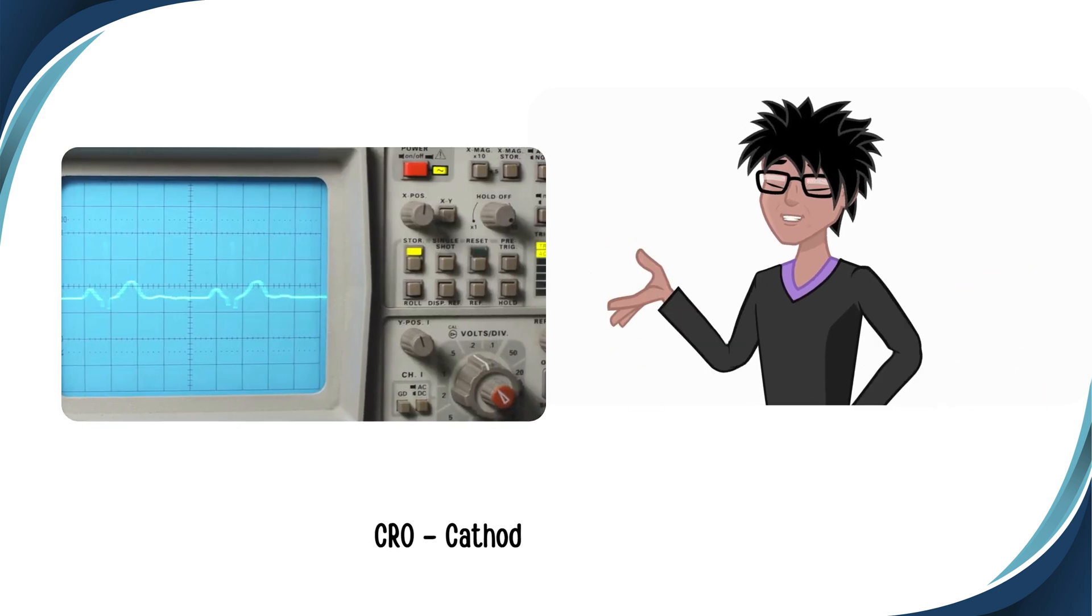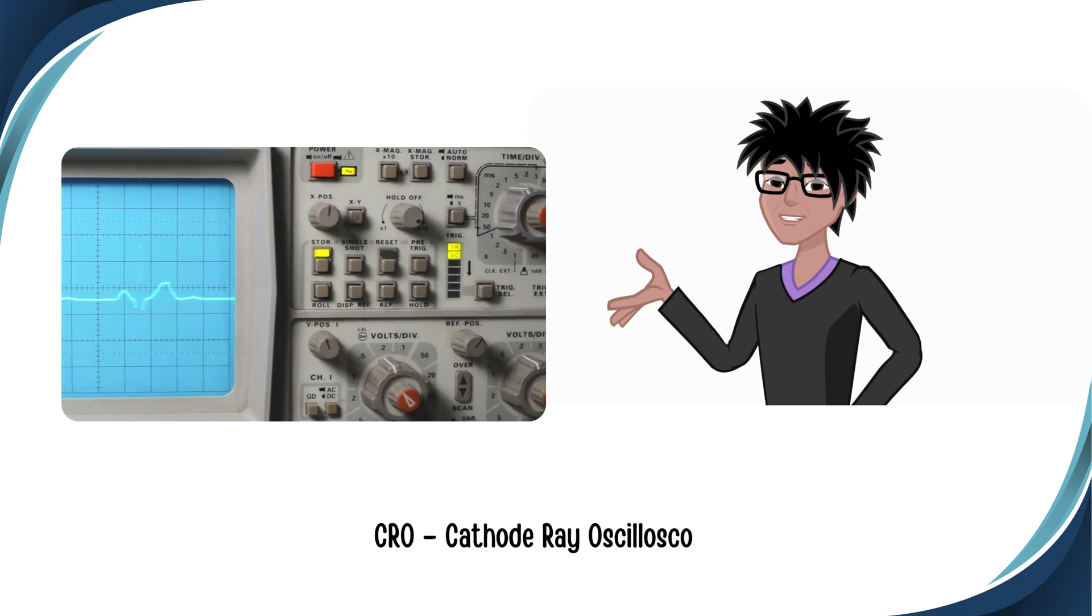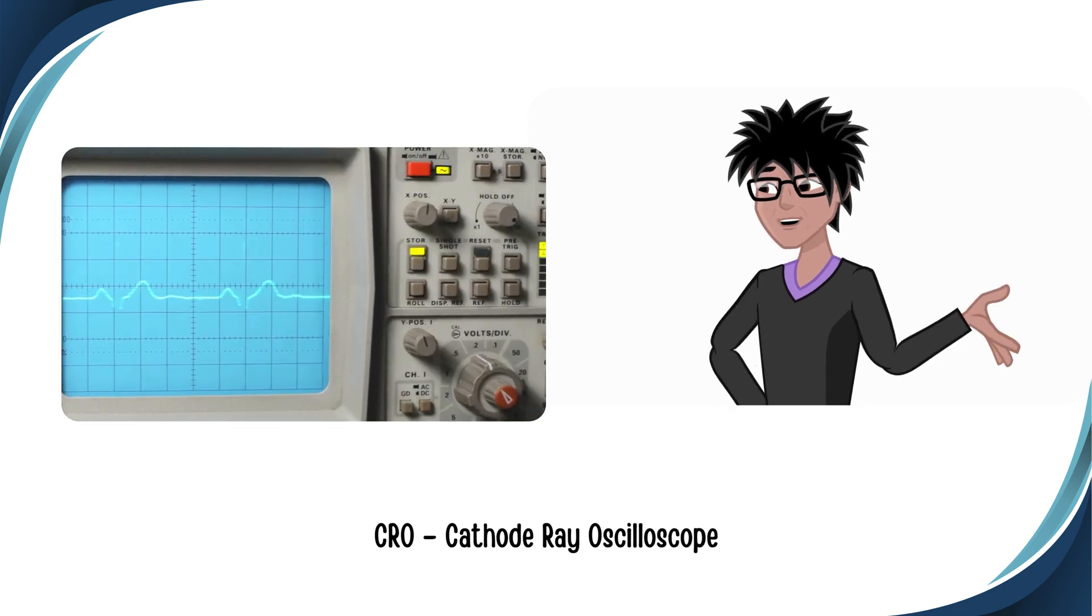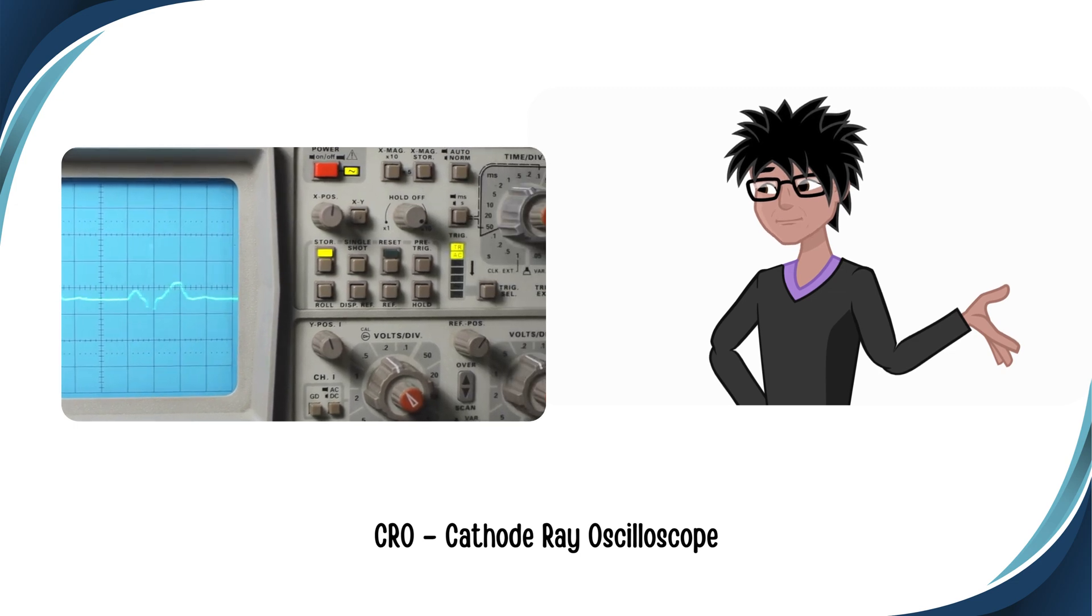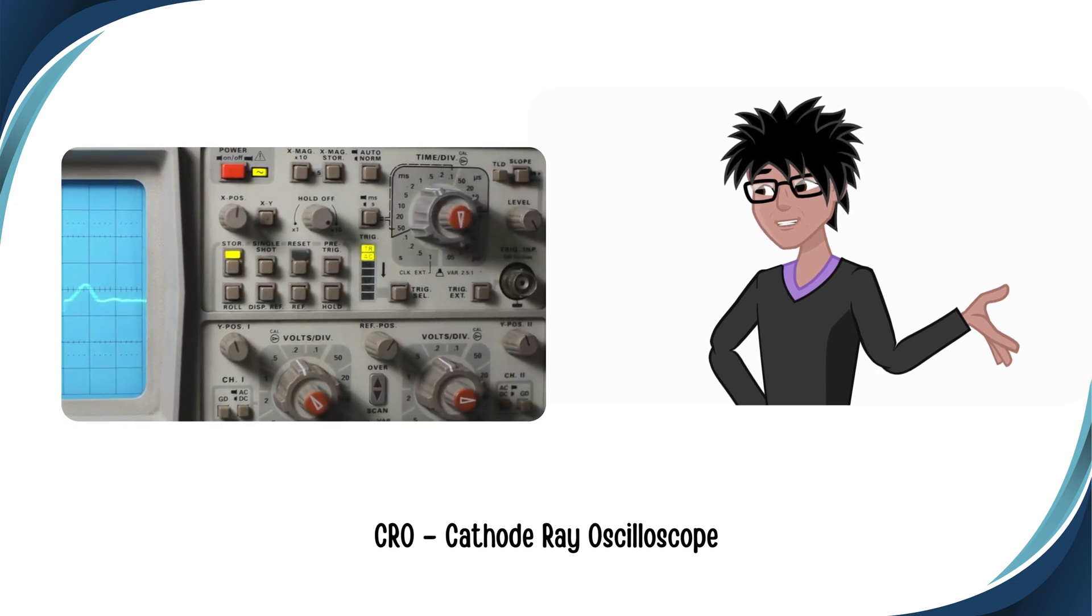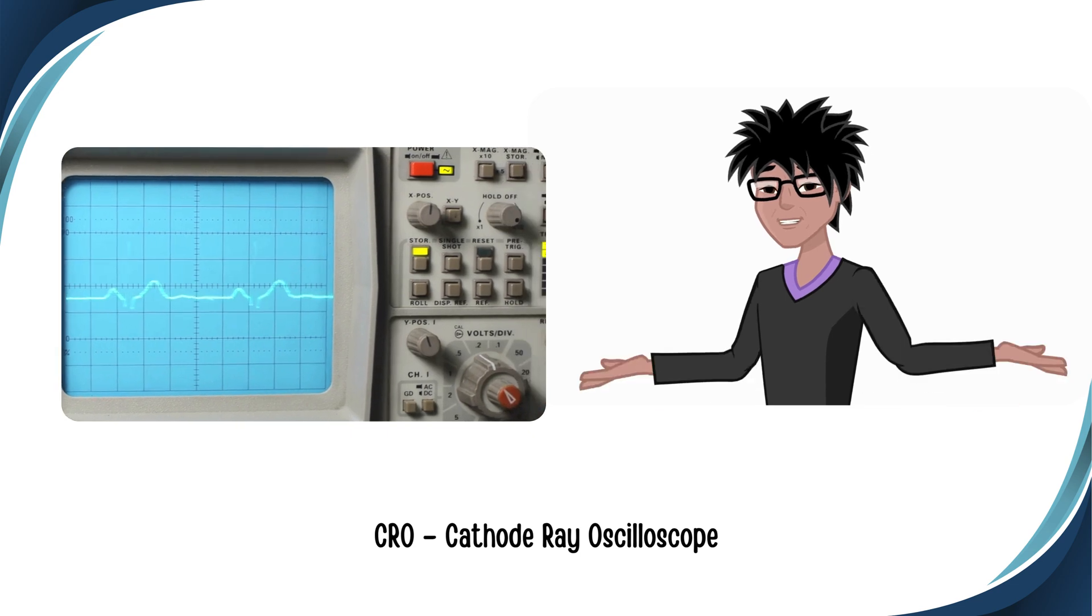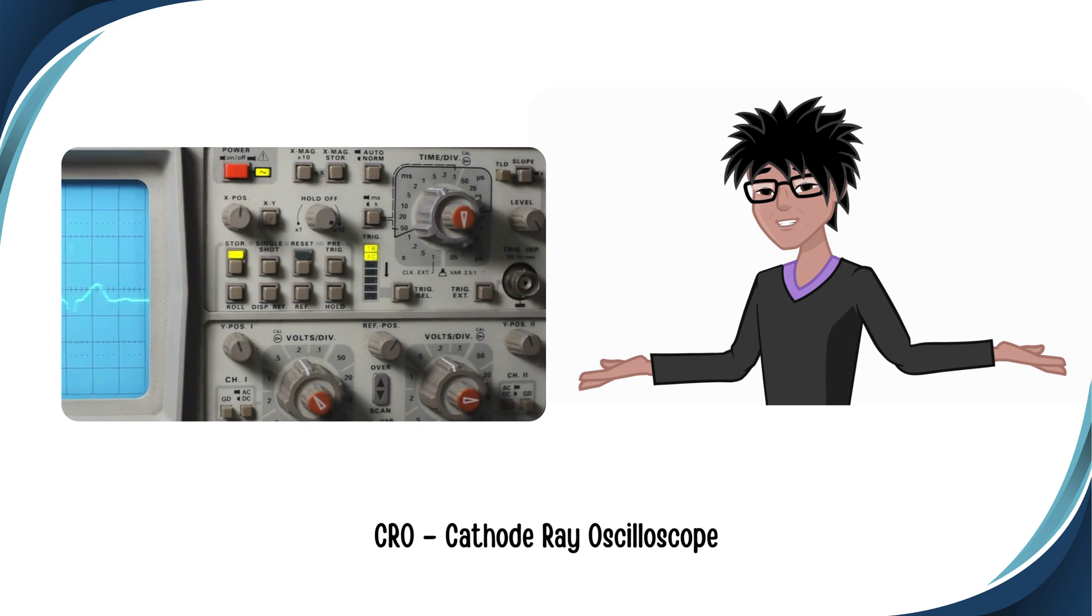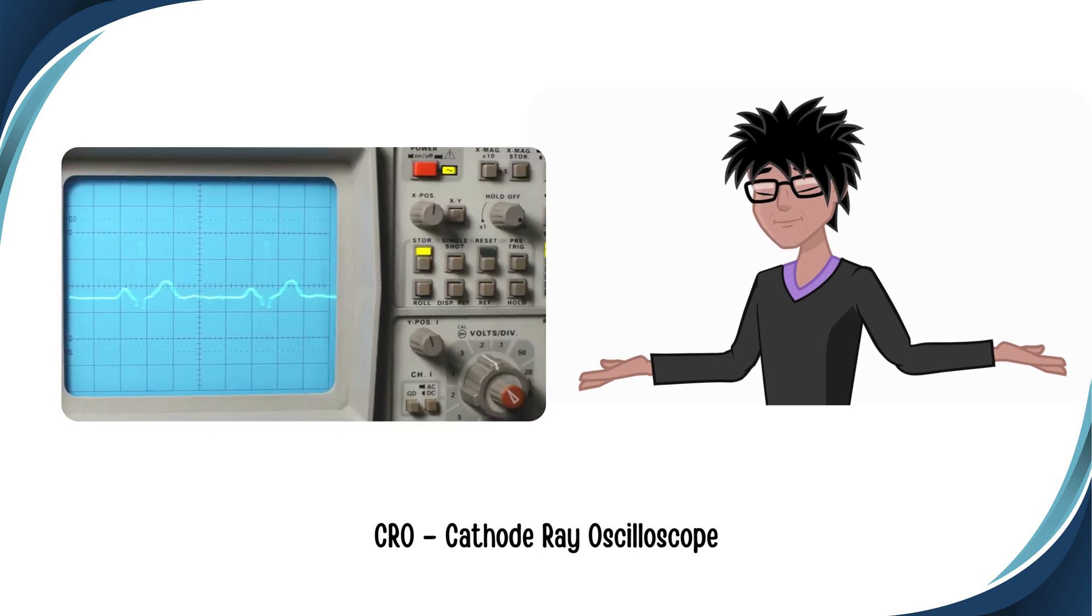Have you ever wondered how scientists and engineers see invisible electronic signals? Meet the CRO, the cathode ray oscilloscope, your window into the world of voltage waves. In this video, let's explore how it works, what's inside, and how it's used in real-world electronics.